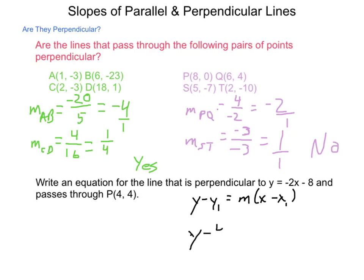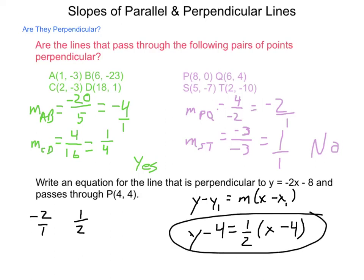Now what is our slope? If our slope 1 is negative 2 over 1, then its perpendicular will be a positive 1 over 2, opposite sign and reciprocal. So our equation comes out to be y - 4 = 1/2(x - 4), and this line will be perpendicular to the original and will go through the point (4, 4).